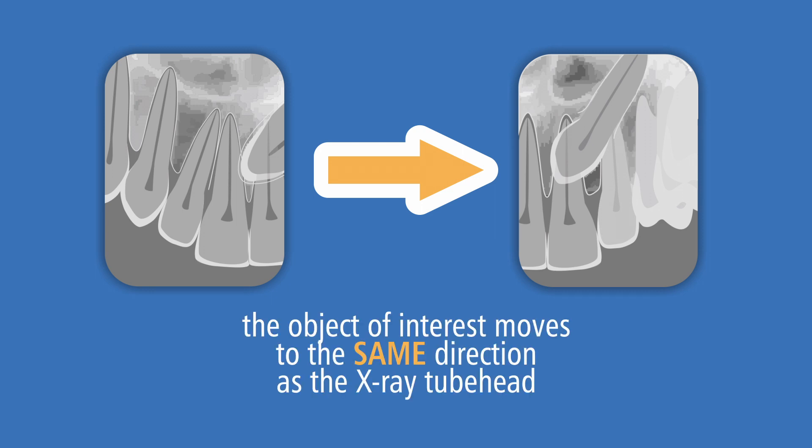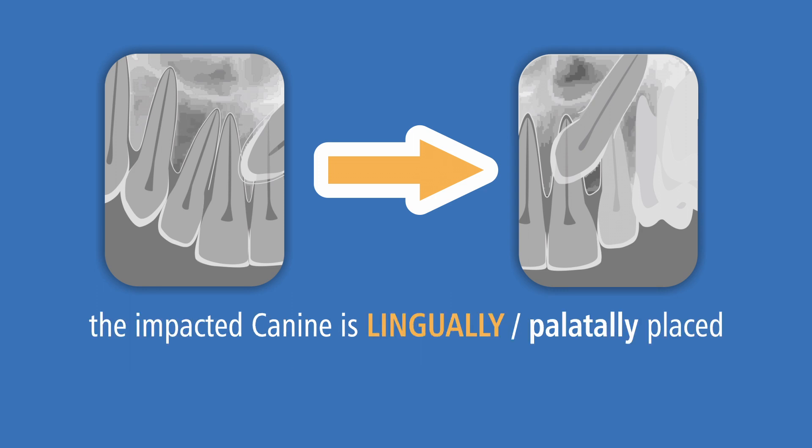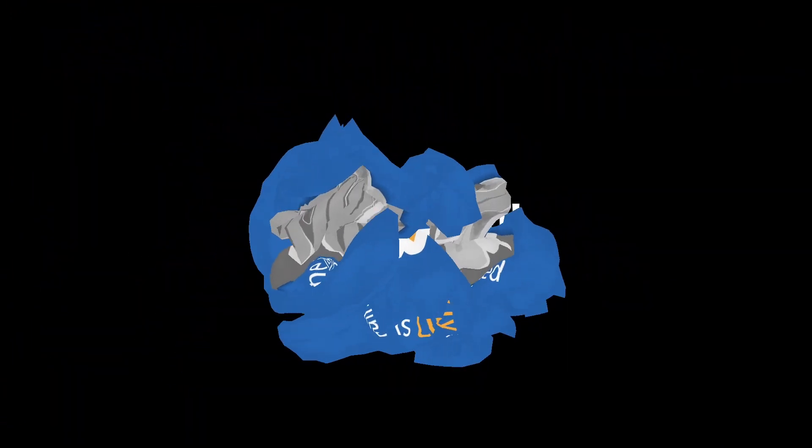Focusing on the impacted canine, the incisal position moved distally — from the mesial of the upper right central incisor root to the mesial of the upper left central incisor root. We can say that the object of interest moves in the same direction as the x-ray tube head. Therefore, we conclude that the impacted canine is lingually, or palatally, placed. That's the end of this video — I hope you find it useful, and see you in the next video!